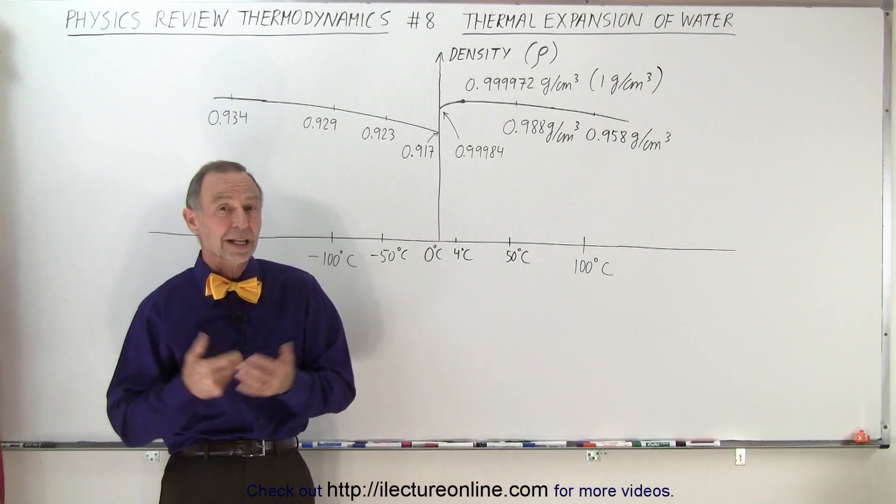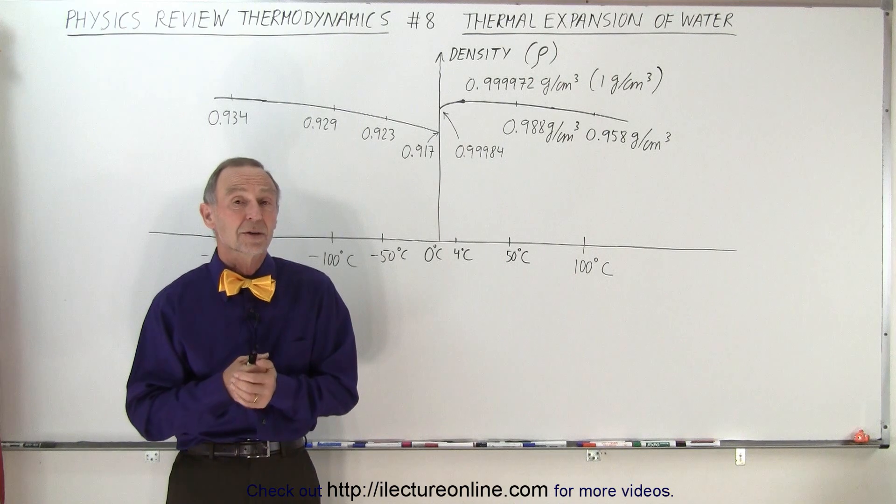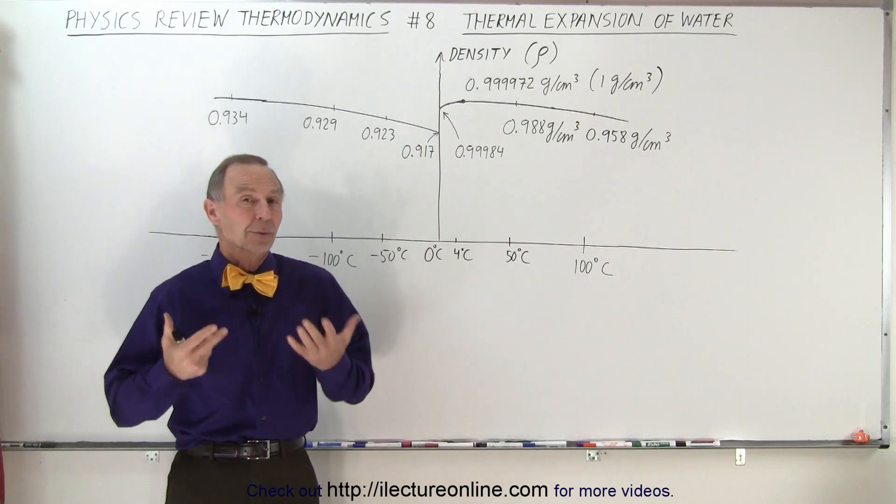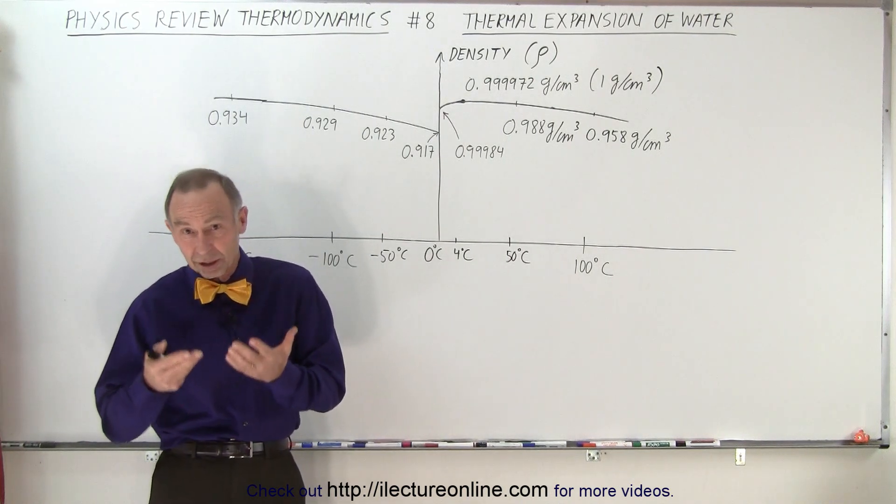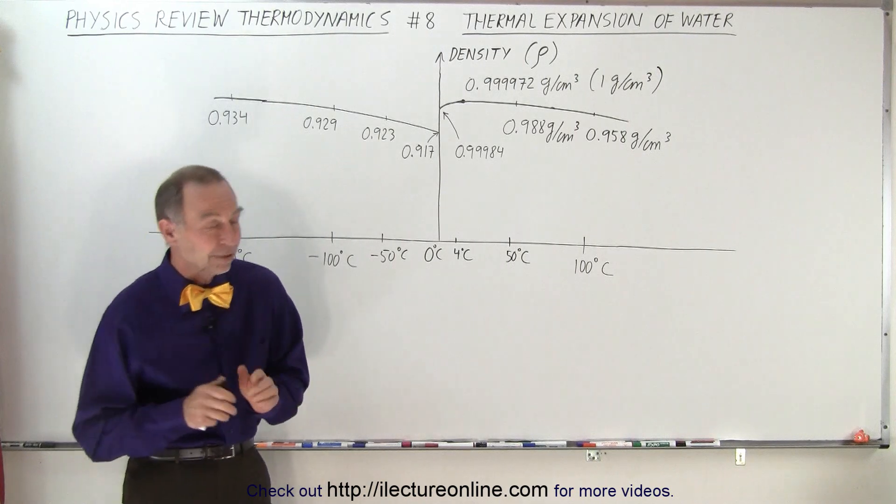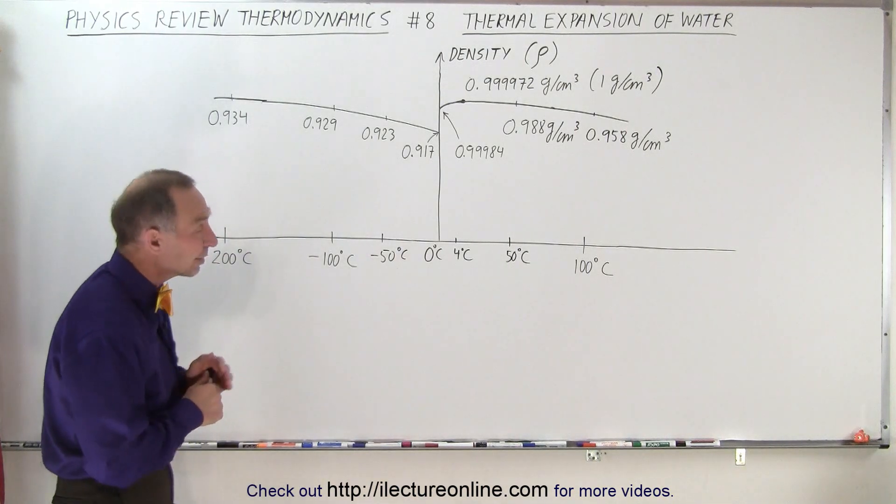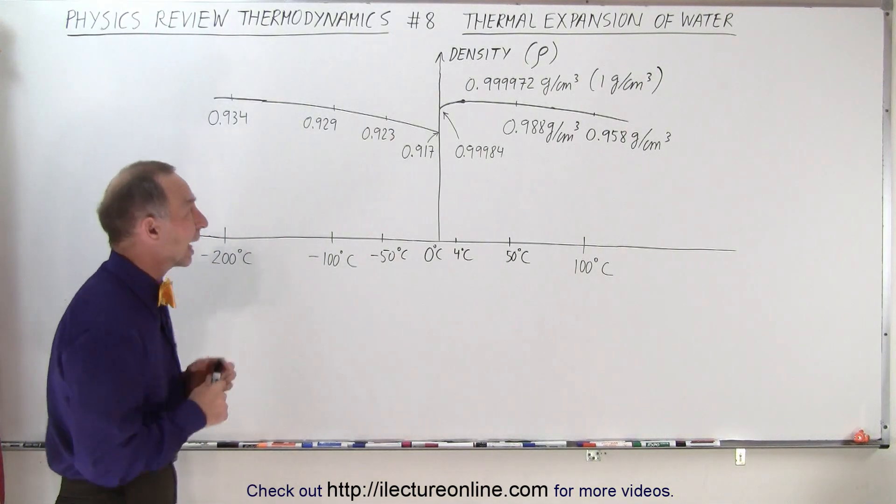Kind of unusual for almost any material or any element because virtually everything is the other way around. Once it becomes solid, it tends to sink to the bottom. So ice and water are different, but they're not constant. So let's take a look at it.